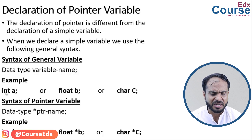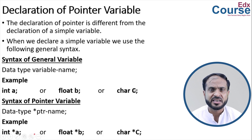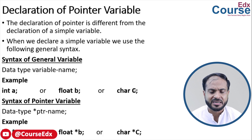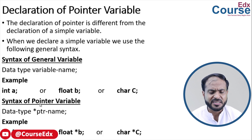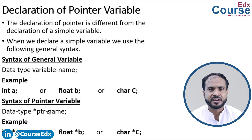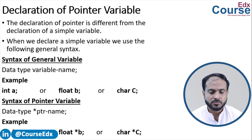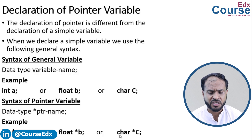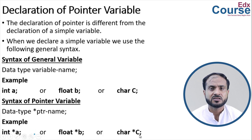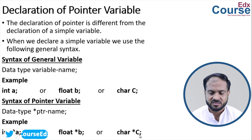For example, for normal variables: int a, float b, char c. For pointer variables: int *a, float *b, char *c.